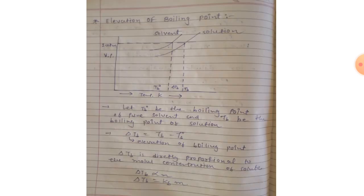Our next second point is elevation of boiling point. The vapor pressure of a liquid increases with increasing temperature. The boiling point is the temperature at which vapor pressure equals atmospheric pressure (1.013 bar). The boiling point of a solution is always higher than the boiling point of the pure solvent, as shown in the diagram I have drawn.